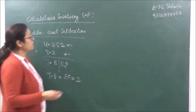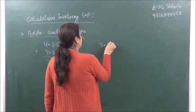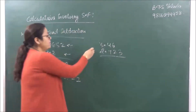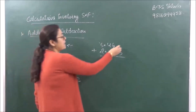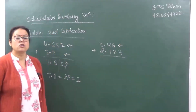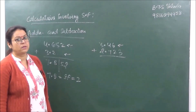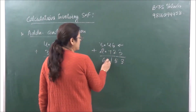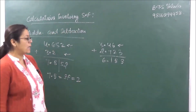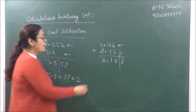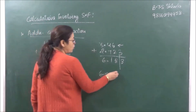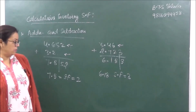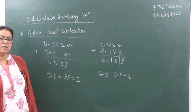Let's take another example: 3.46 + 2.723. Here 3.46 has 2 decimal places and 2.723 has 3 decimal places. The answer is 6.183, but we report to 2 decimal places: 6.18, which has 3 significant figures.